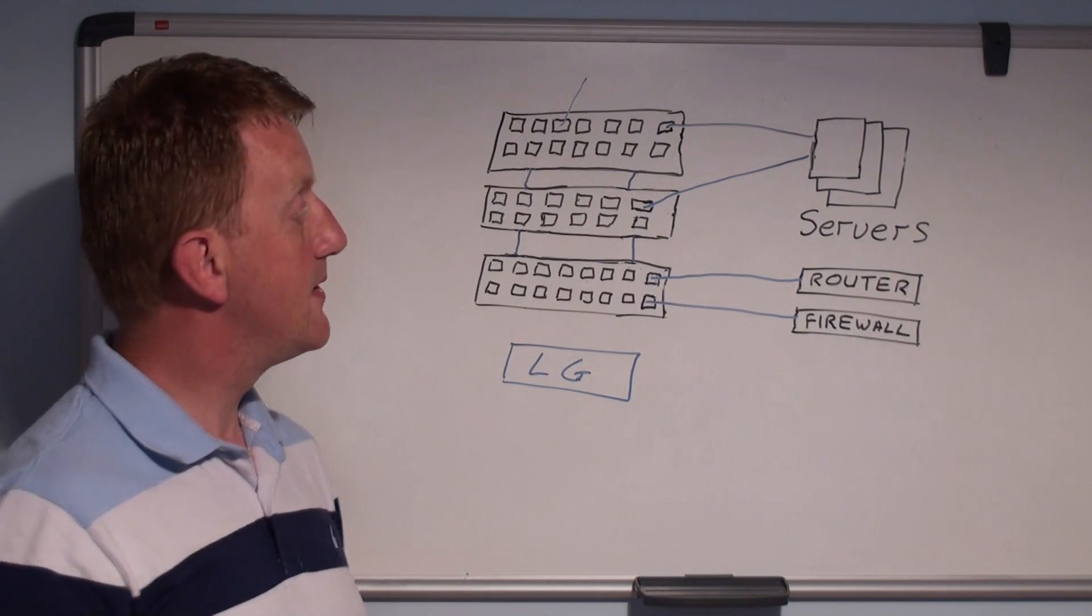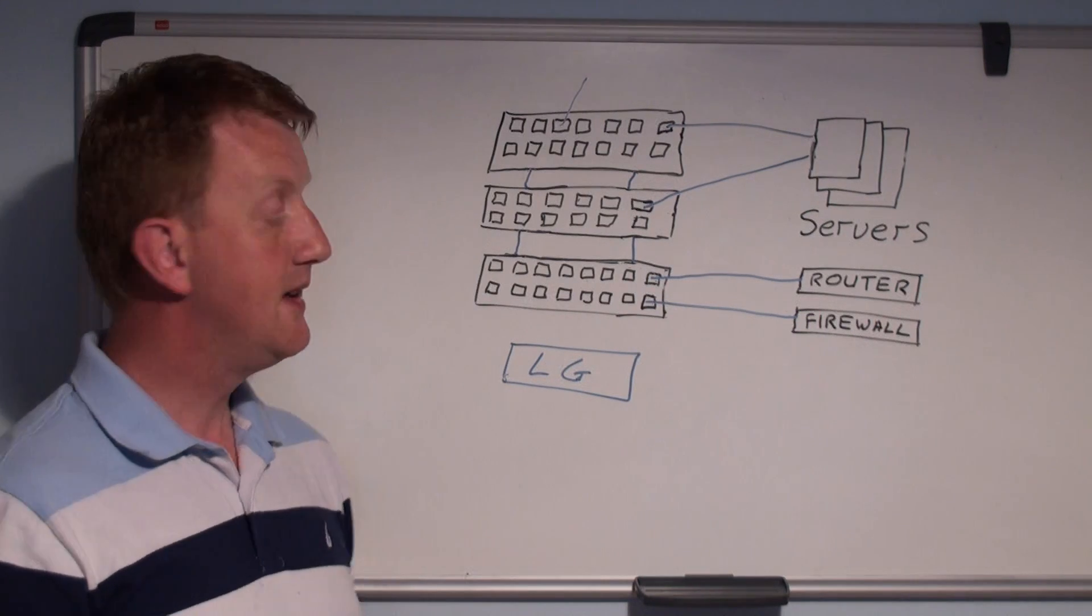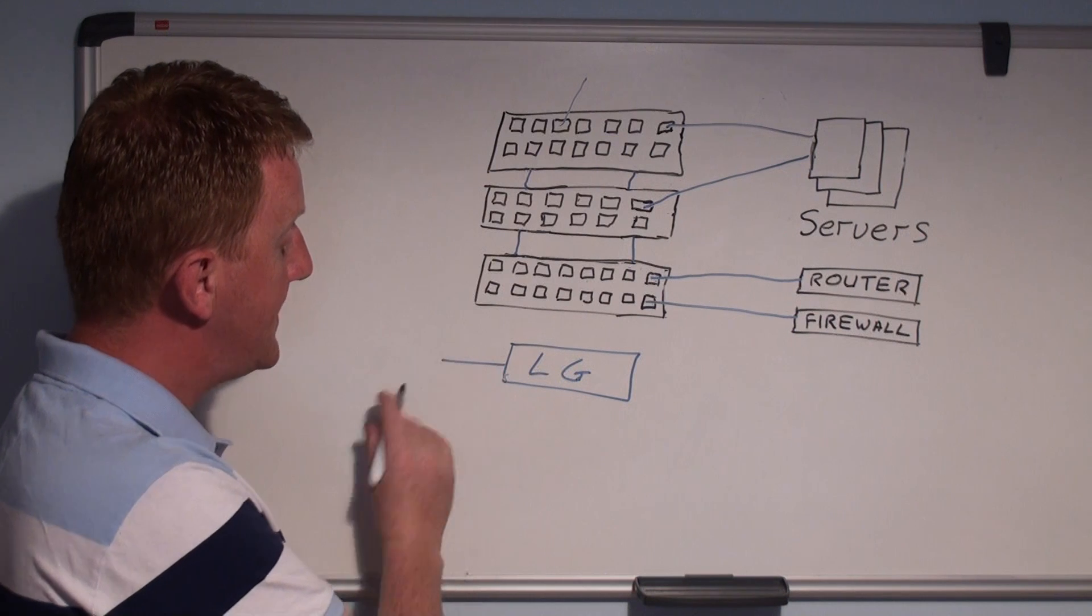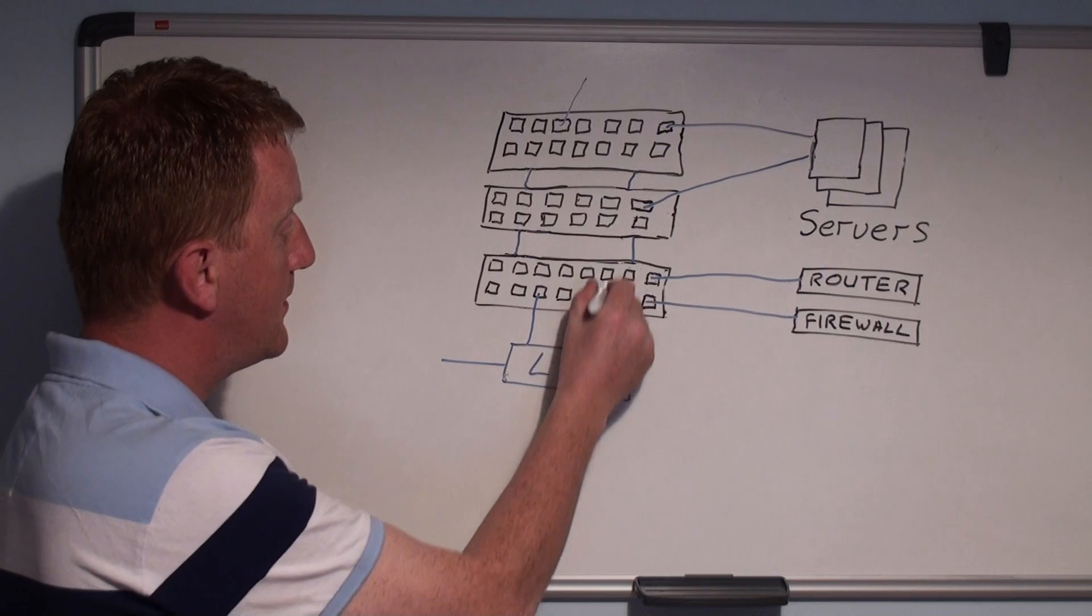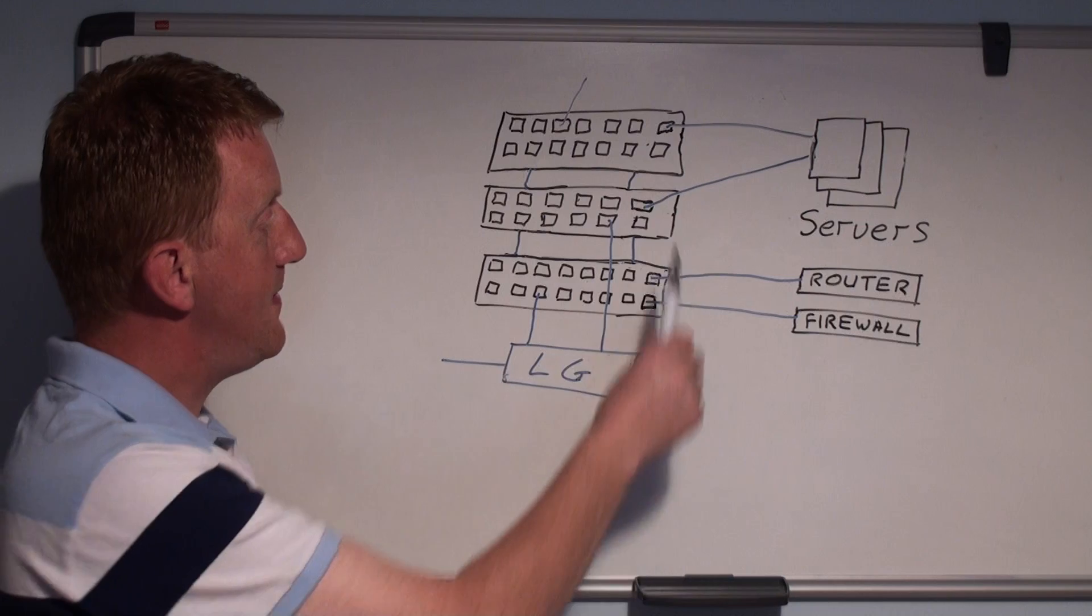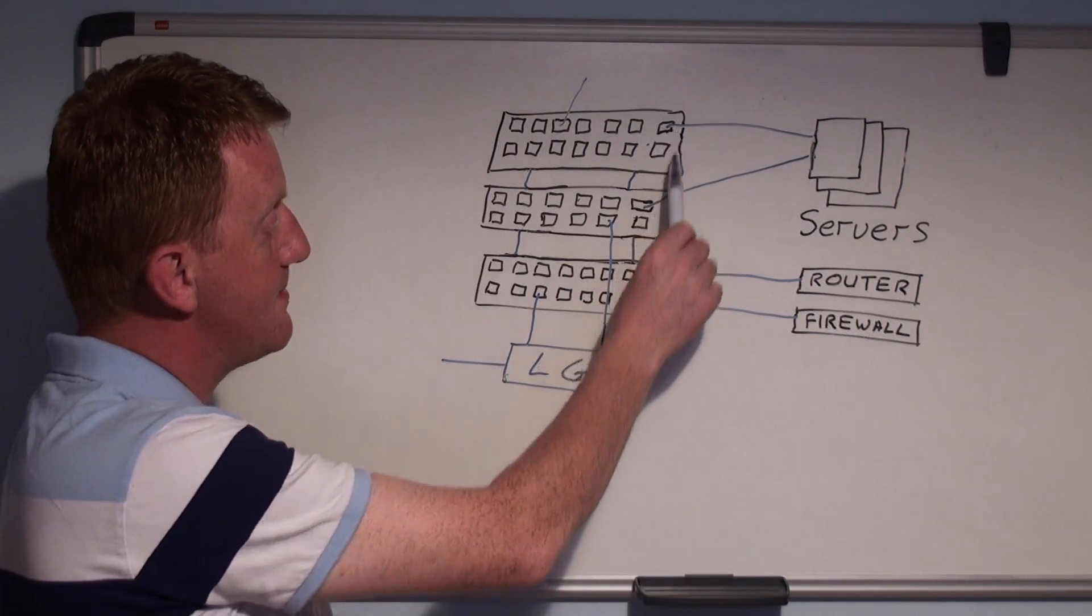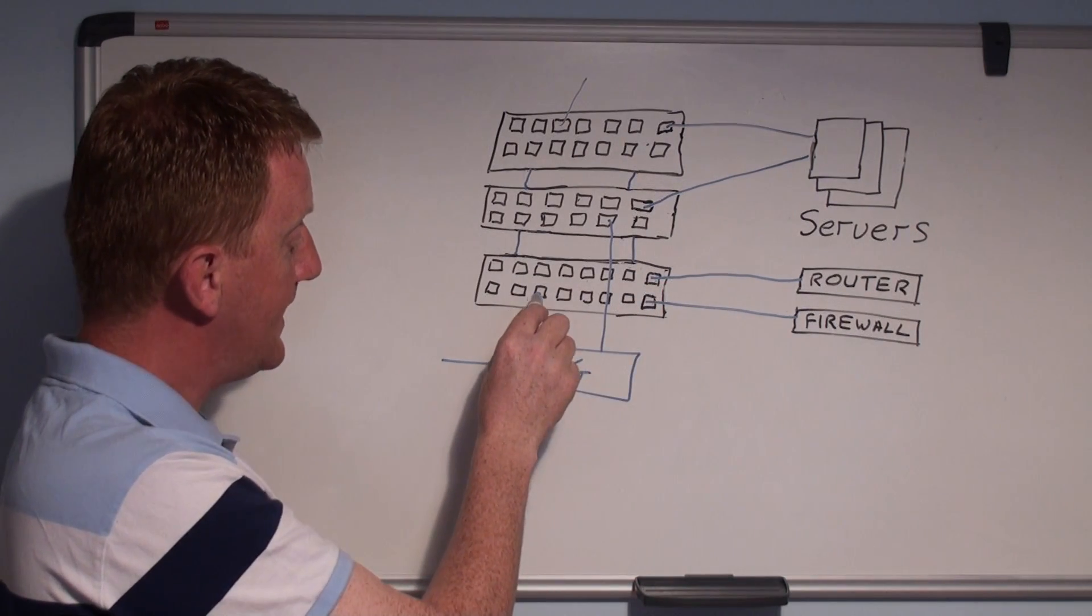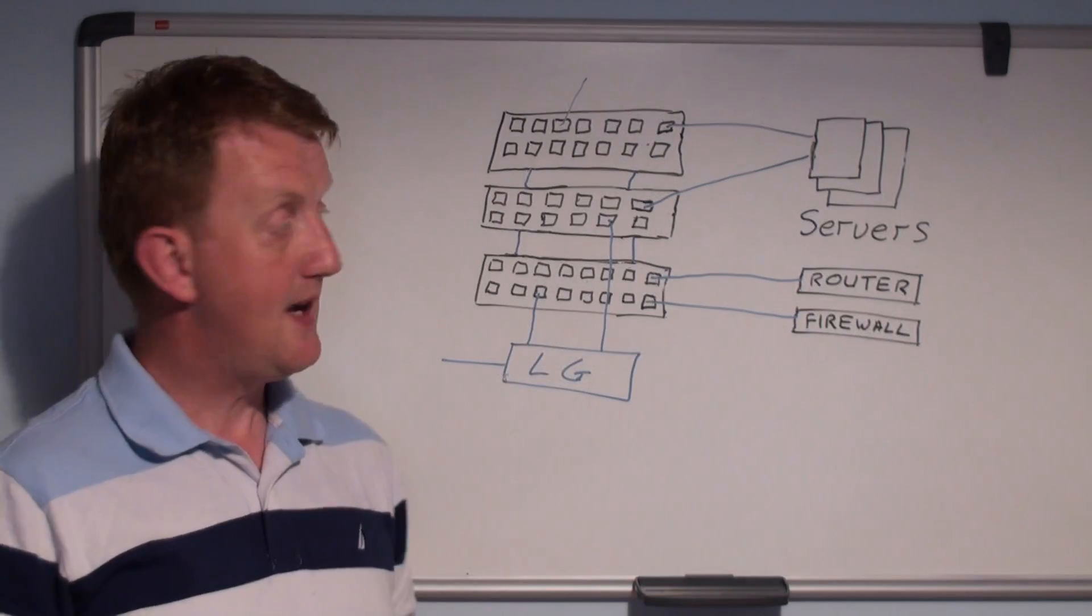In some cases, if the box you've assigned to LanGuardian only has maybe two or three network interfaces, one interface is used for management and we could plug one in here and one into a second switch. What you might want to do is get some downtime outside of working hours and maybe move some servers to another switch so that we've got a sensor port connected to all the switches that have important servers.